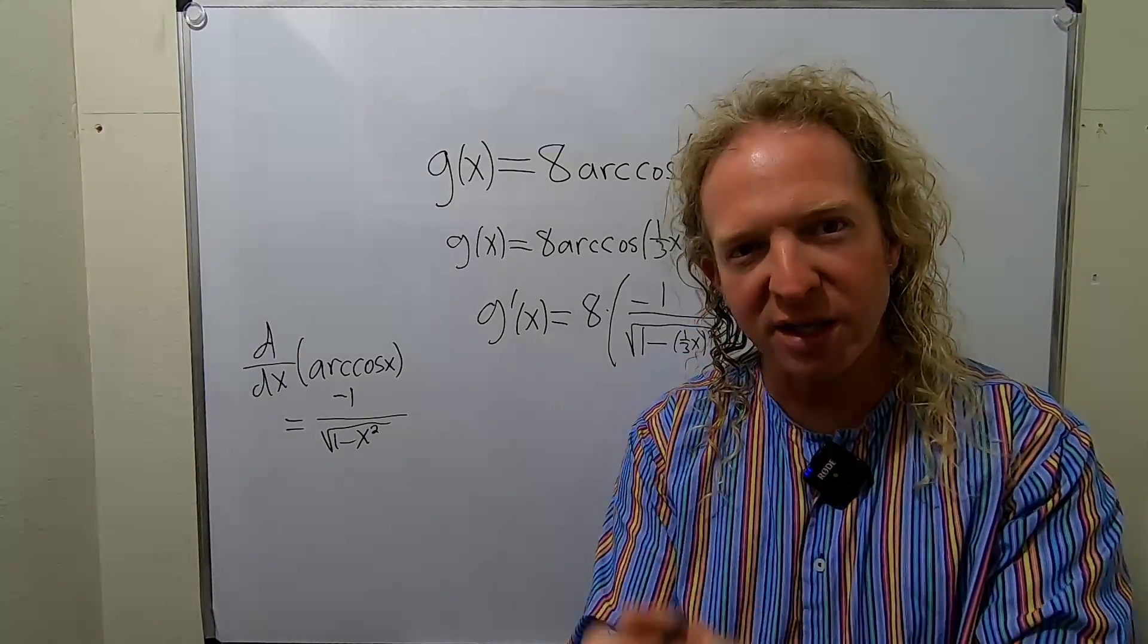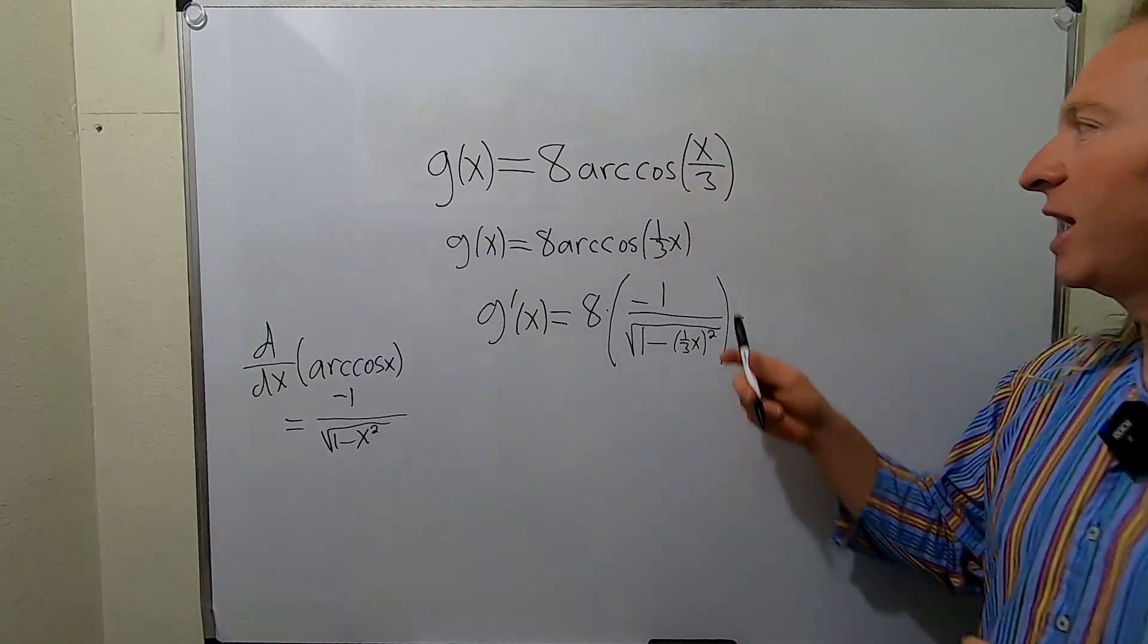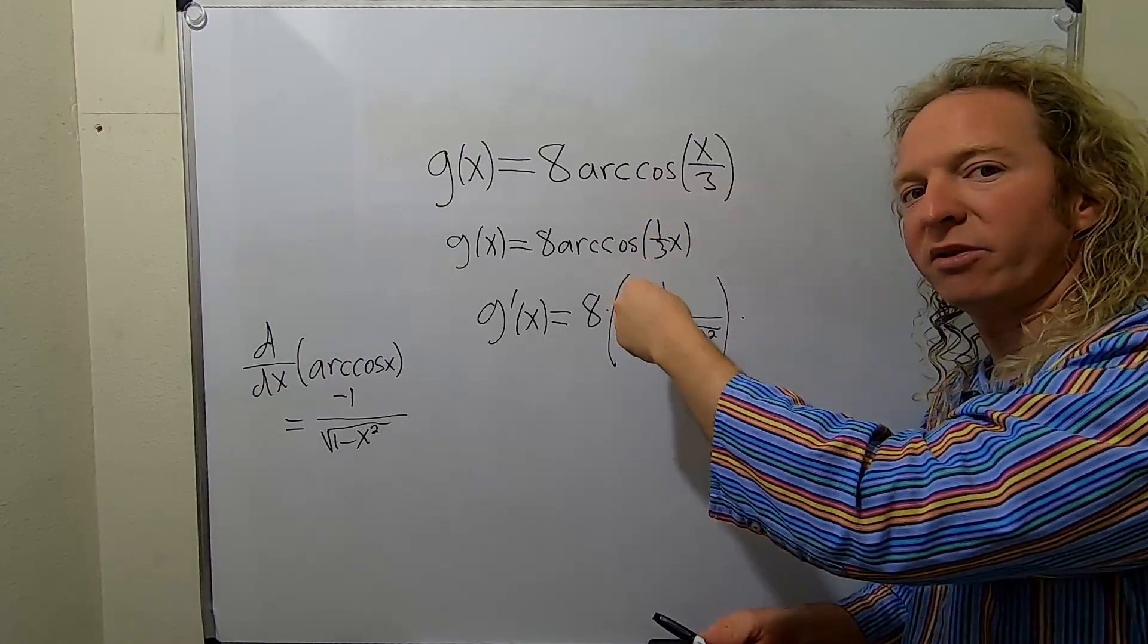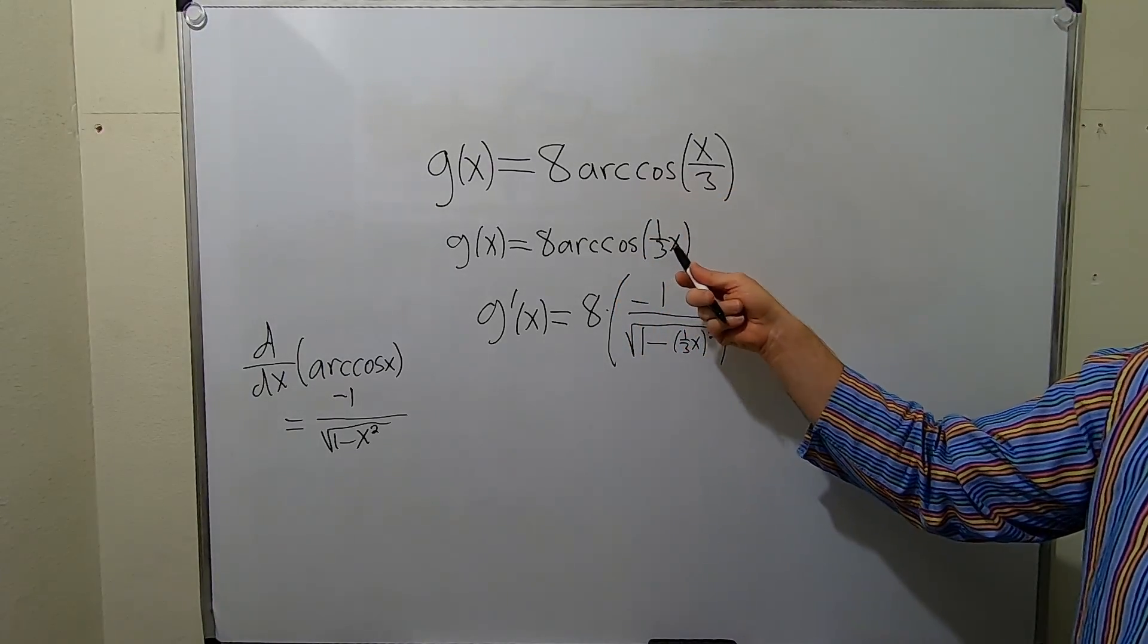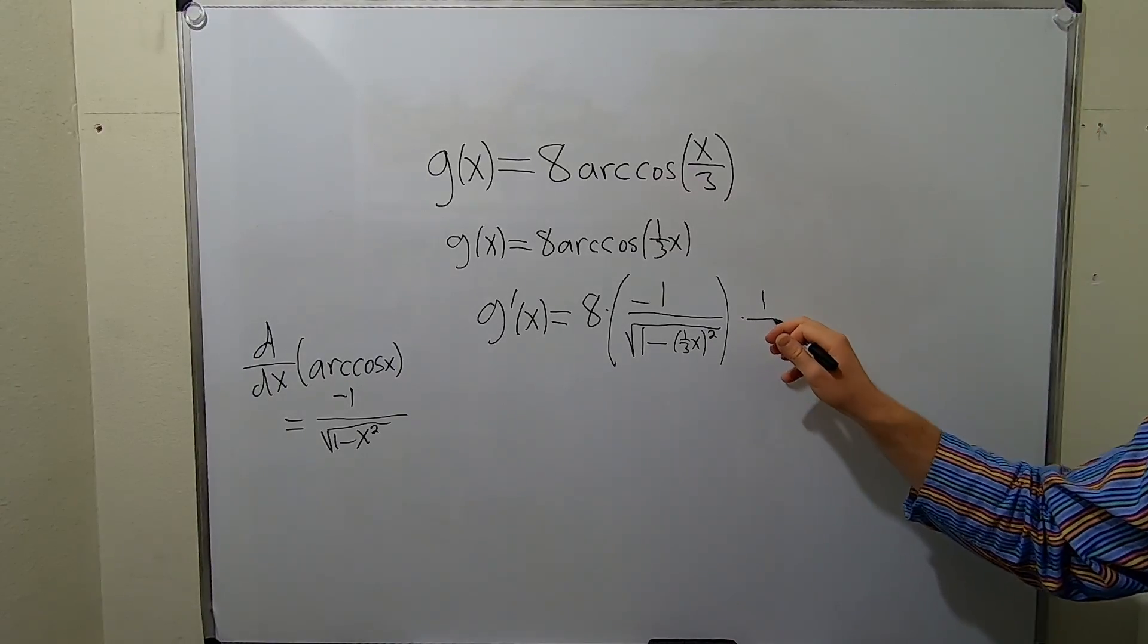Times the derivative of the inside function. That's why I rewrote it, because we're going to have to take the derivative of x over 3 at some point. So it's easier if we think of it as 1 third x. Because now when you take the derivative, the derivative of x is 1, so we're just left with 1 third.